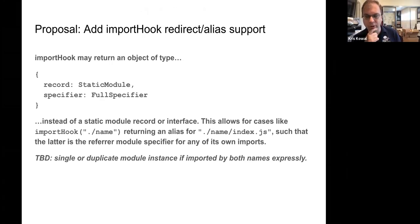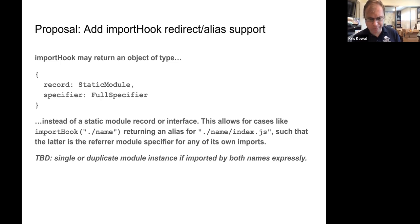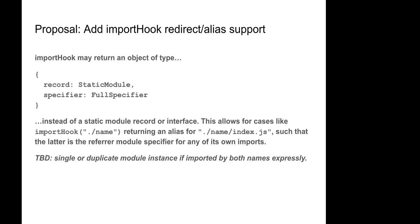How do you solve the problem of Node's redirect - for example, name to name/index.js? That's done during resolution, which happens prior to evaluation, prior to parsing even. You perform resolution and that is how you obtain your static module. You must provide the absolute URL, which is effectively the full specifier, and then there is some normalization that Node does on that.